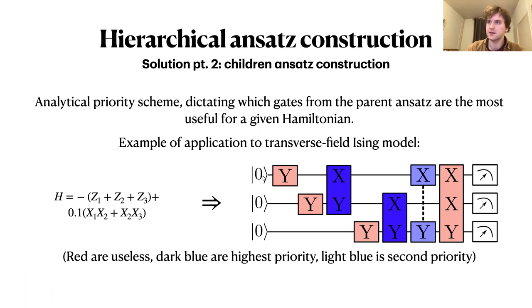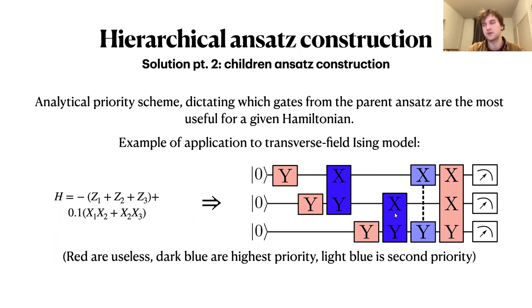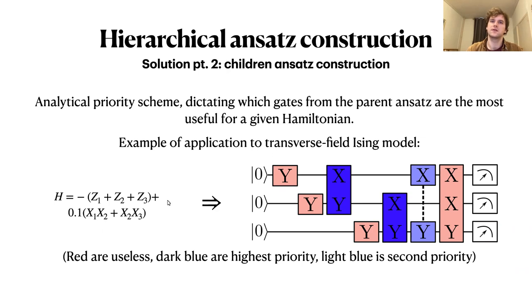Taking a three-qubit system as an example — scalable to arbitrary system size — the reduction scheme works as follows. The dark blue gates are the most important ones, covering the most relevant part of the Hilbert space and getting you closest to the target state if you choose any two. The light blue are second most important. The red ones never appear, actually for symmetry reasons — this Hamiltonian has parity conservation symmetry, meaning flipping an odd number of qubits takes you out of the symmetry block. This is the transverse field Ising model.